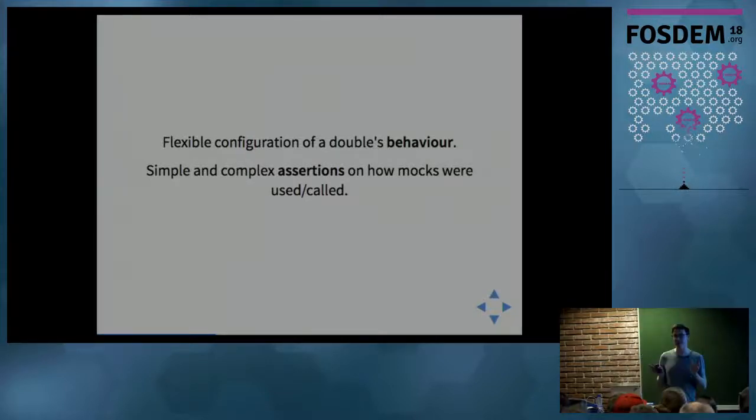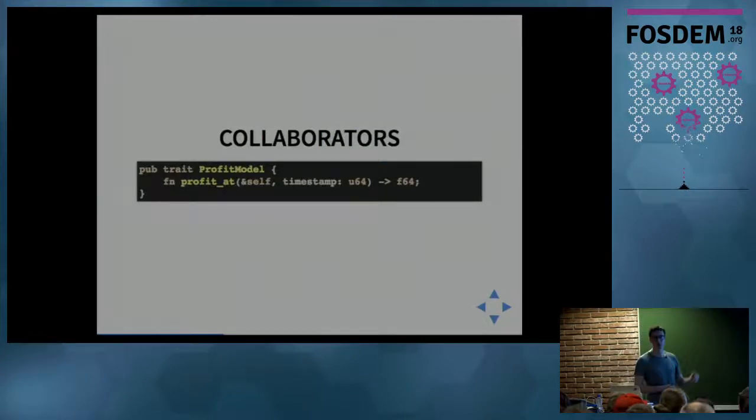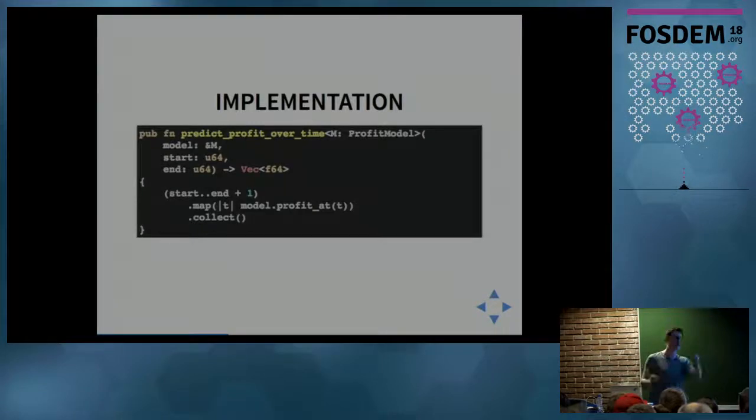A classic example in the field I work in: let's say we were trying to predict the profit of a stock portfolio over time. Imagine we have some trait called profit model. This has one method, profitAt, which takes some timestamp and returns the profit at that given timestamp. We have a function called predictProfitOverTime whose goal is to generate a time series of profits.